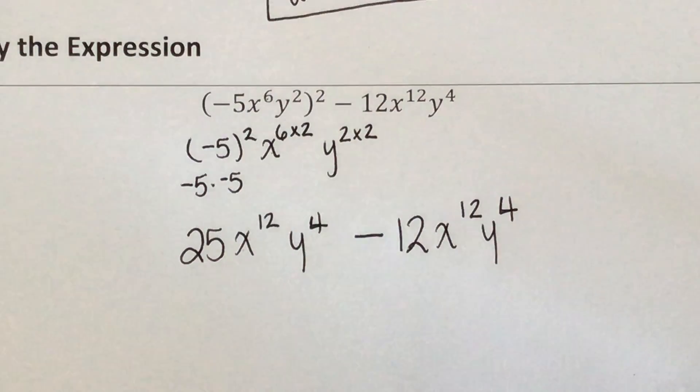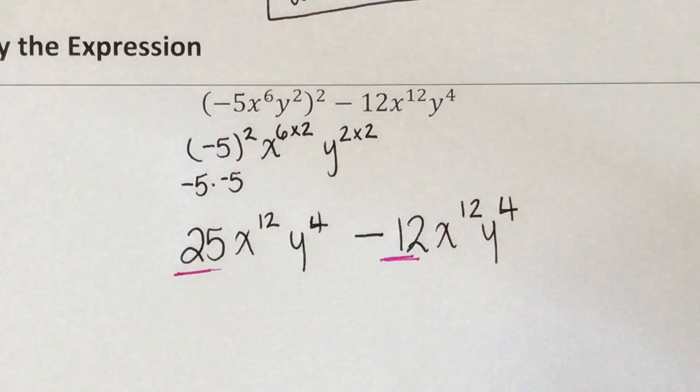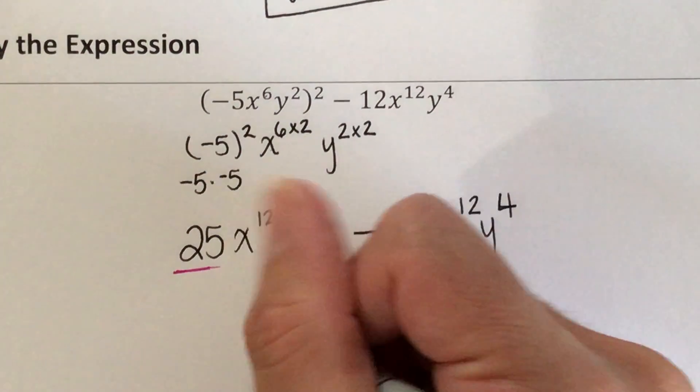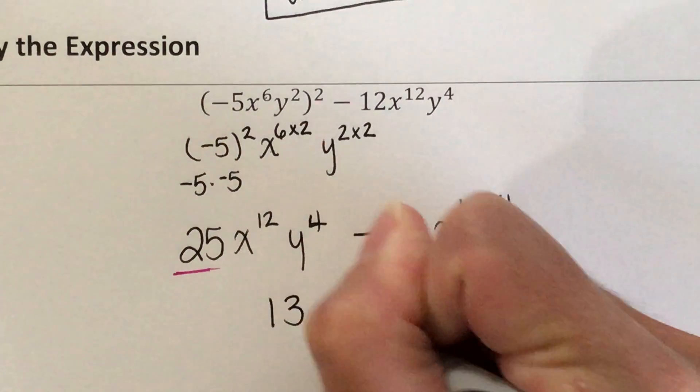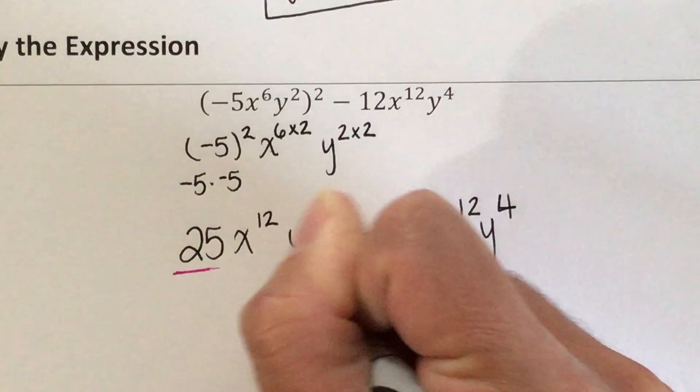So when I combine these, 25 minus 12 simplifies and becomes 13 x to the 12 y to the 4.